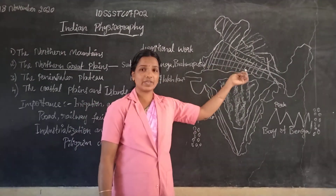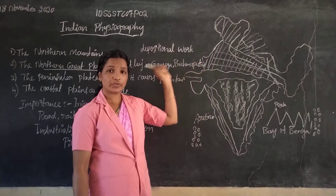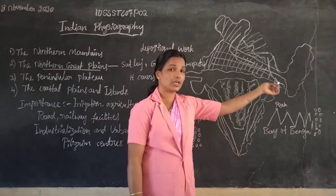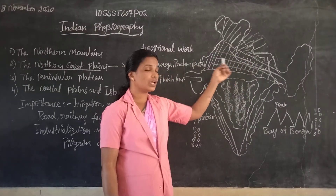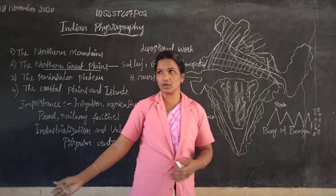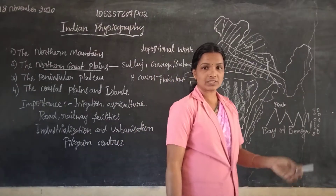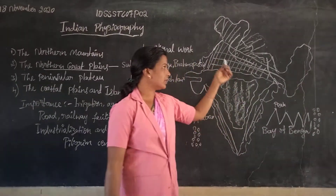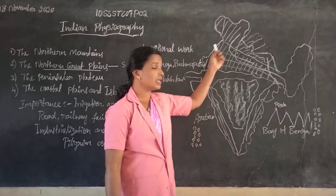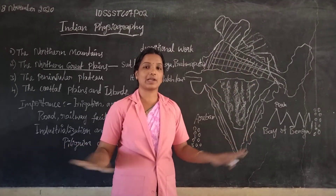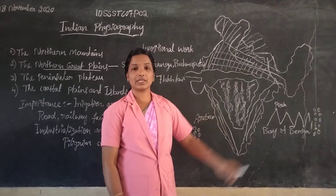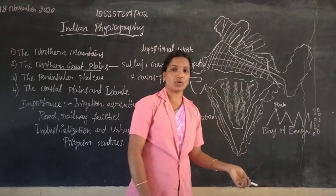These plains are formed by the depositional work of the rivers. Deposition means that when rivers flow, they carry some depositional waste materials — soils. Soils are carried by the rivers as they flow, and this creates a great flat land. Alluvial soil is found in this great plain, which is a fertile soil.